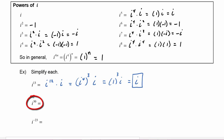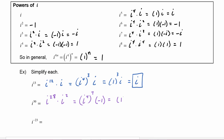Here we have i to the thirtieth. The largest multiple of four we could have is twenty-eight, so we write i to the twenty-eighth times i², because twenty-eight plus two gives us thirty. i to the twenty-eighth is i to the fourth raised to the seventh power, and i² is negative 1. i to the fourth is 1, to the seventh power, multiplied by negative 1, and this becomes negative 1.